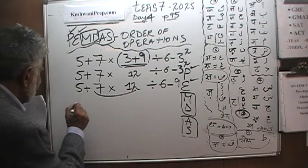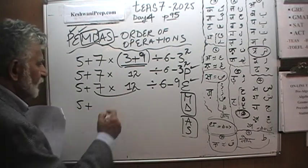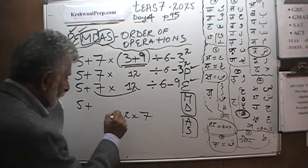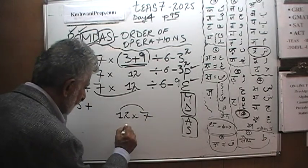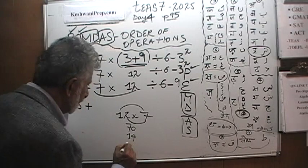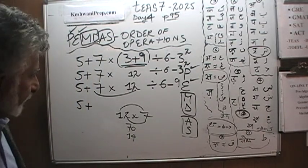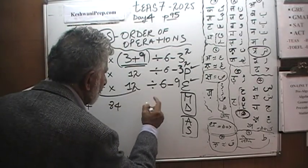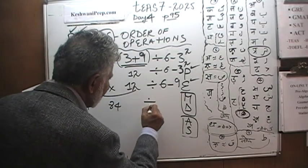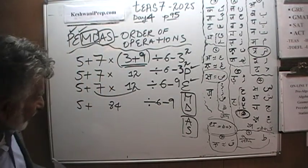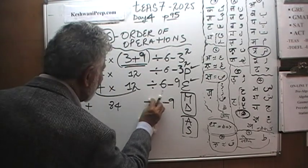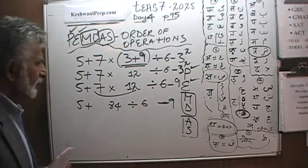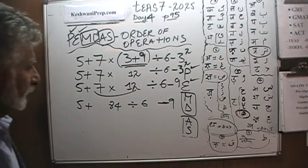7 times 12. This is 7 times 12. So we have 5. And 7 times 12 is the same as 12 times 7. 12 times 7. Watch for here. 12 times 7 is equal to 10 times 7, which is 70. And 2 times 7, which is 14. Which gives us a grand total of 84. So we end up with 84. Divided by 6 minus 9. So we did the multiplication.